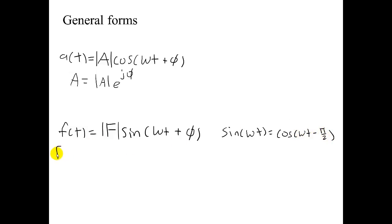Using this identity, I can rewrite F(t) as magnitude of F times cosine of omega t plus phi minus pi over 2.